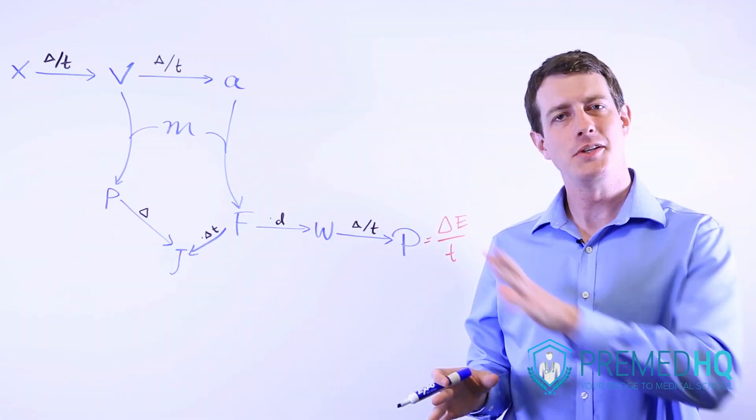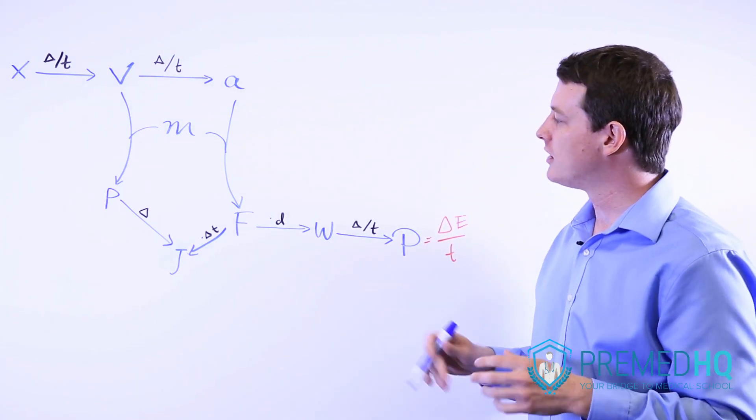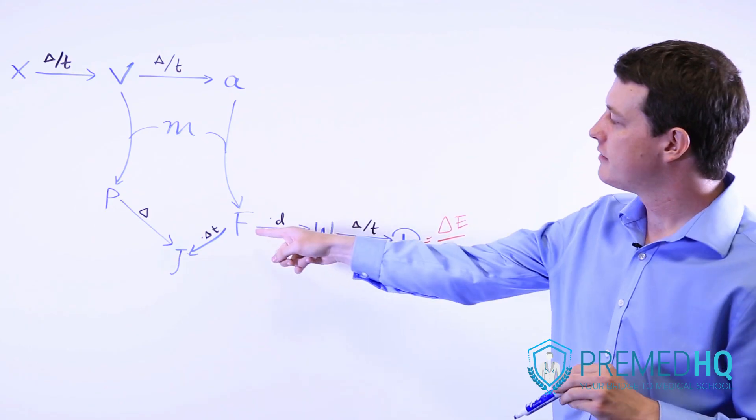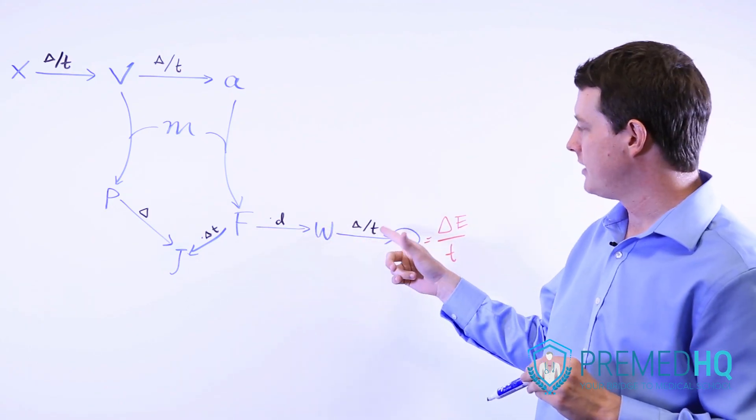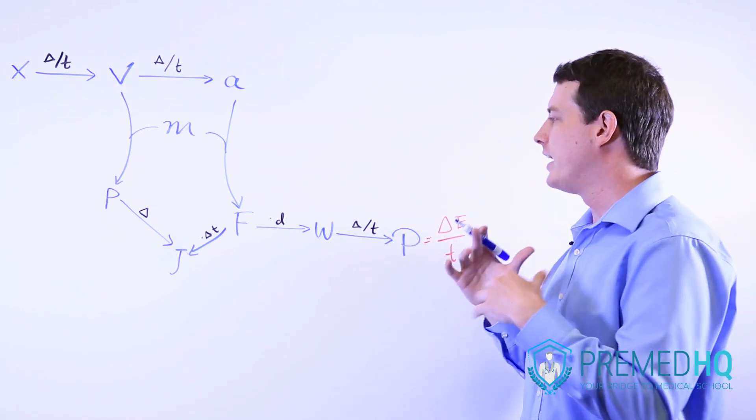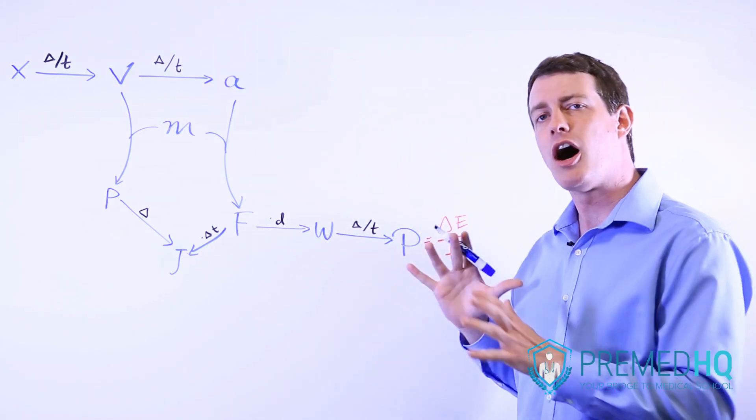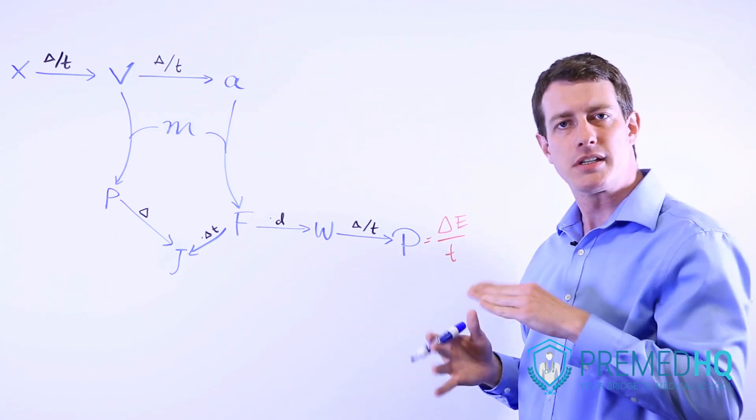You'll do quite well if you can commit this chart to memory and understand some of its nuances. For example, notice that moving from force to power, you multiply by distance and then divide it by time. Now remember that distance and displacement are not the same thing, but oftentimes they will be listed as the same thing if the movement is in a straight line.